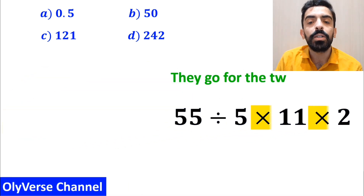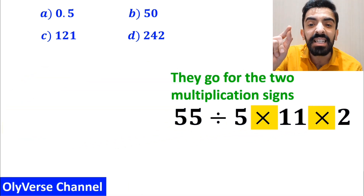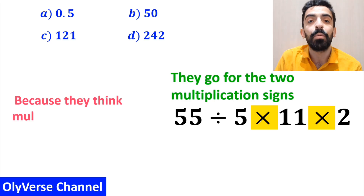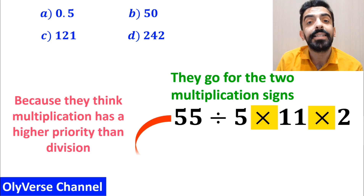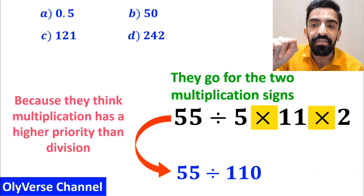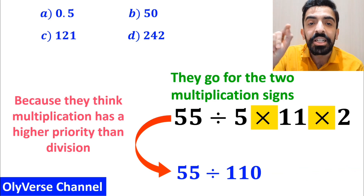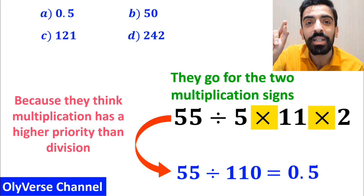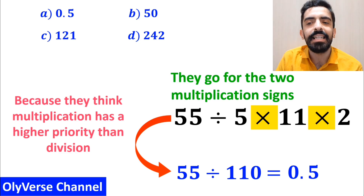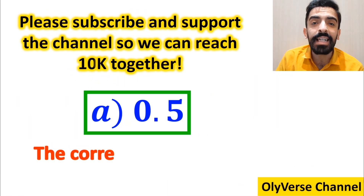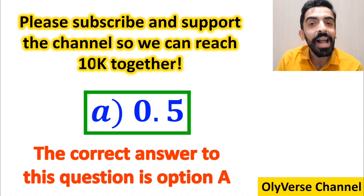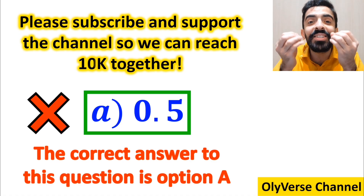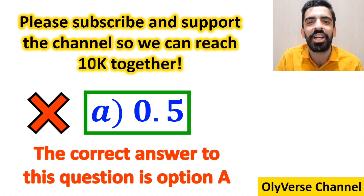In the next step, they go for the two multiplication signs, because they think multiplication has a higher priority than division. So instead of that expression, they write 55 divided by 110, which finally gives them the answer 0.5. They immediately conclude that the correct answer is option A. But we were tricked — it's not the correct answer.